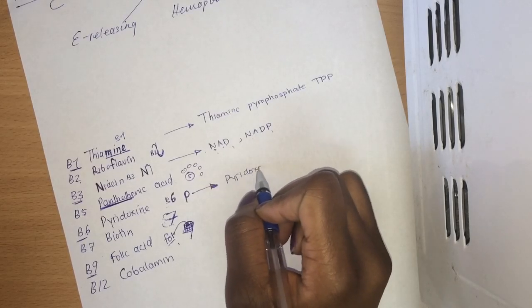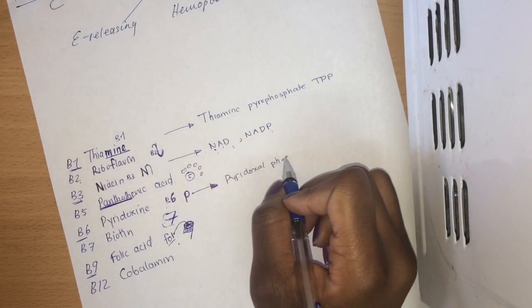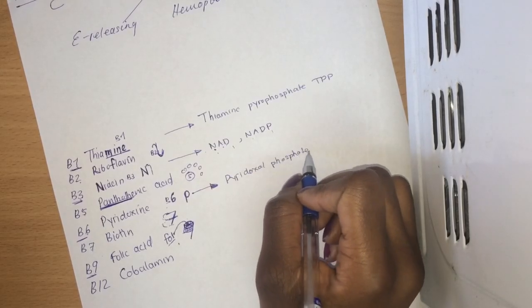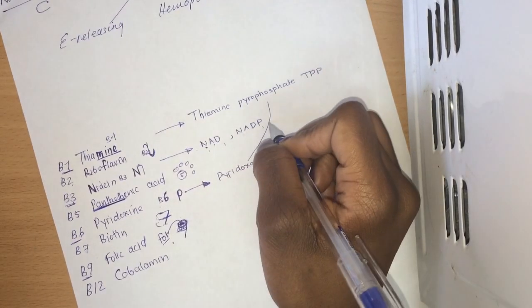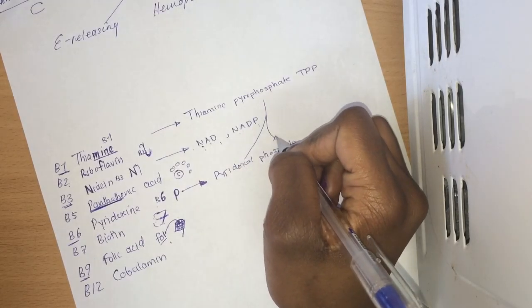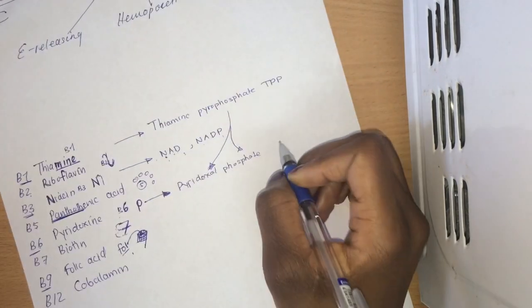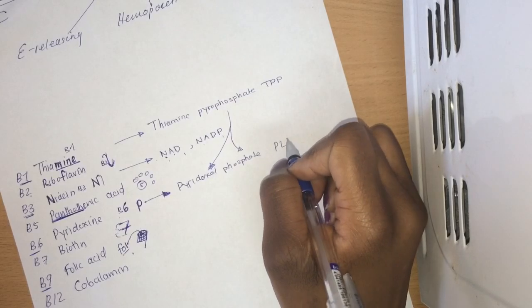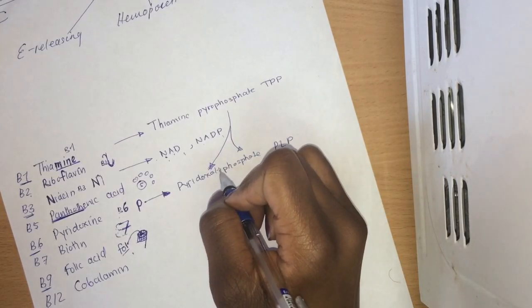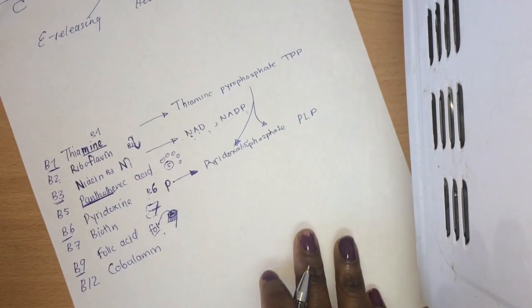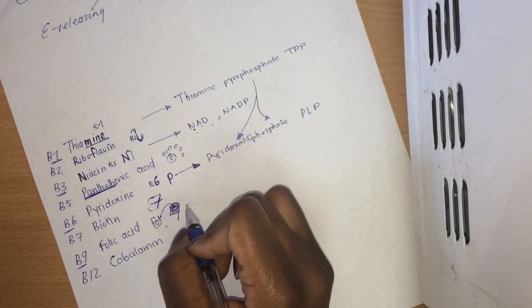For pyridoxine the coenzyme is pyridoxal phosphate. If you have trouble remembering that, just refer to this and take the pyro from there and the phosphate from there, and then you have pyridoxal phosphate. It's abbreviated as PLP, pyridoxal 5 phosphate.